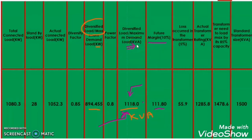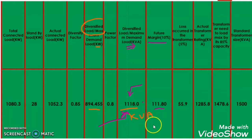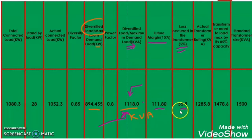The transformer is not always 100% efficient — there will always be some losses in the transformer, and those losses are also a load on the transformer. If we select a transformer of the same rating as the load, then due to transformer losses, it cannot process that full load. So we must always consider a losses margin while selecting the proper transformer size. Here I selected the transformer losses as 5%, which is 55.9 kVA.